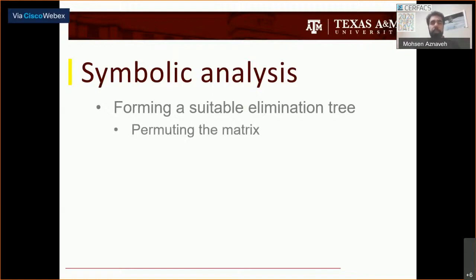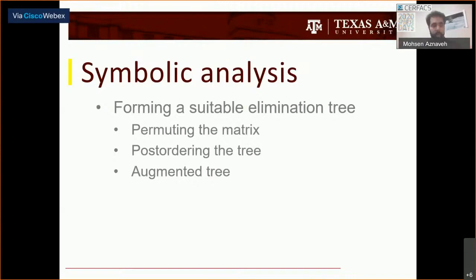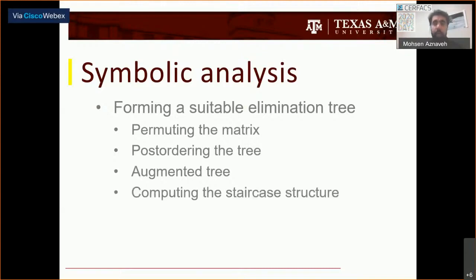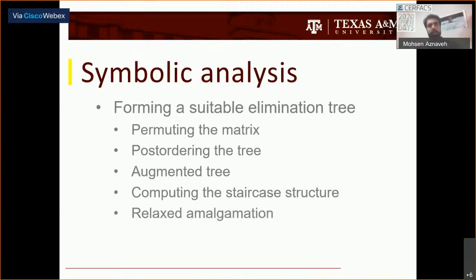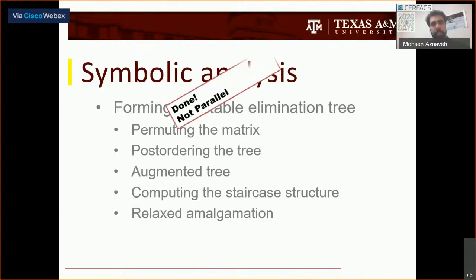It permutes the matrix and posts over the tree. One of the things I added is an augmented tree — I'll talk about that. It has some good characteristics that add to my algorithm, and especially with new developments, my algorithm can achieve better performance. I also compute the sparsity structure, so when I make the pivotal columns, it has a sparse structure and I can exploit those zeros. I also add some relaxation that's involved in the analysis.